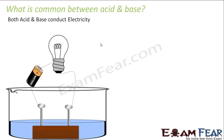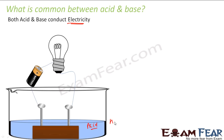Both conduct electricity. To do the activity, you can set up a circuit like this: take a wooden board which won't conduct electricity, put the nails, put the wire, and connect the battery to the setup. Now put acid in one case — maybe HCl — and you will see that it conducts electricity. The bulb glows.